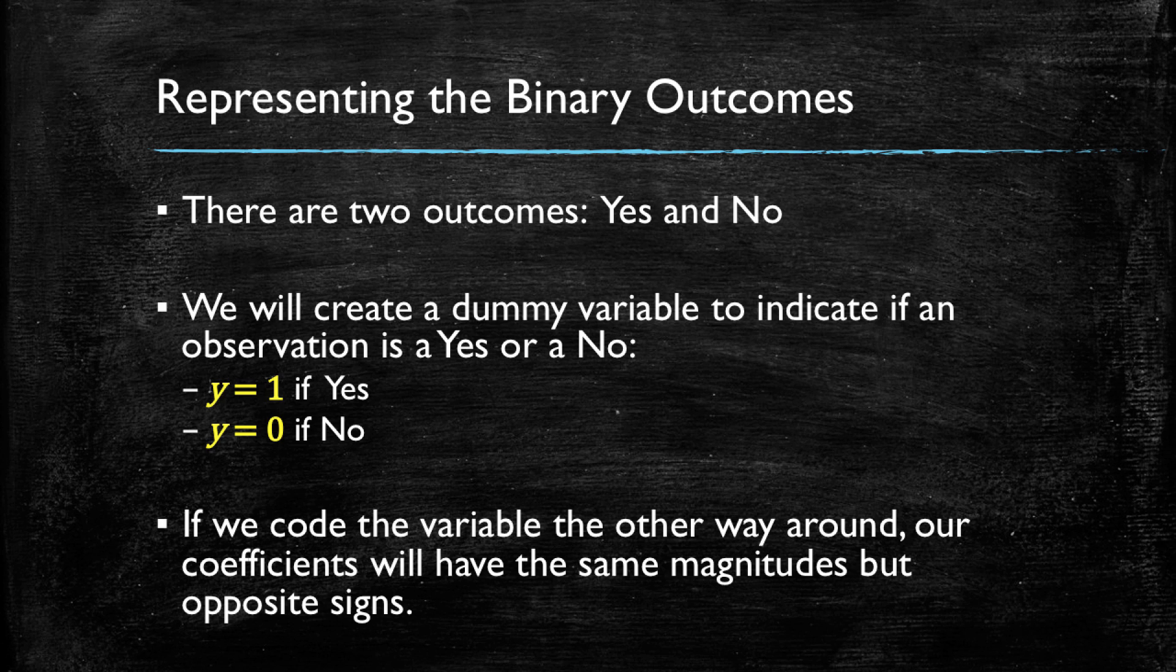Note that if we coded our dependent variable the other way around, the coefficients are going to have the same magnitudes but the opposite signs. How come? Well, whatever helps me, for example, buy a product will have the exact opposite effect in helping me not buy that product. And thus, we're going to have the opposite sign for that attribute.